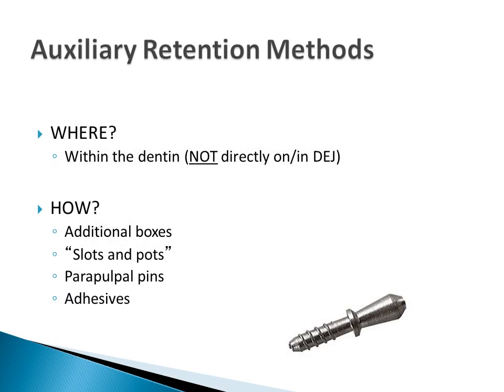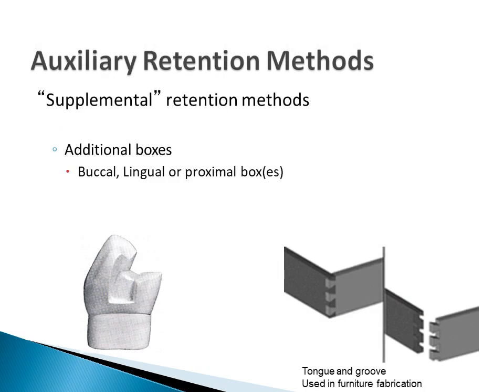Methods of retention can include an additional box like a proximal box, a slot or a pot, parapulpal pins, and/or adhesives. The slots, pots, and pins are placed within the dentin. They are not placed directly on the DEJ. With more adhesive restorations being placed, pins, slots, and pots are not used as often as in the past.